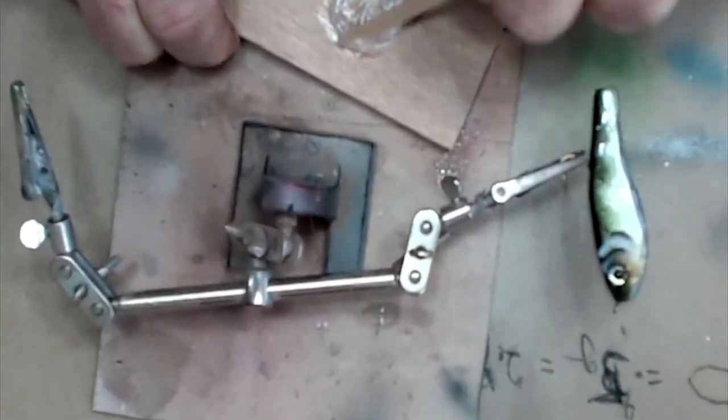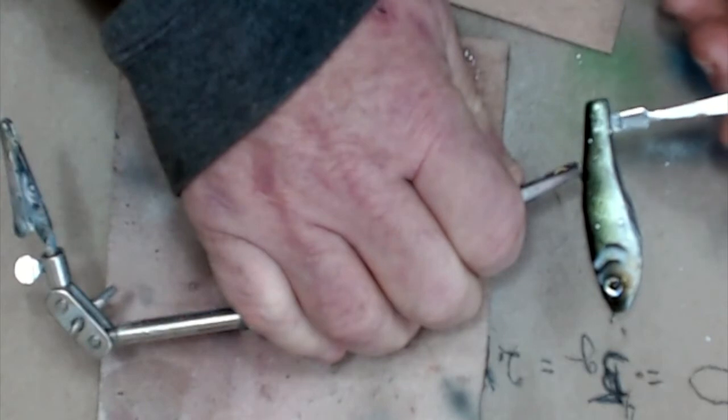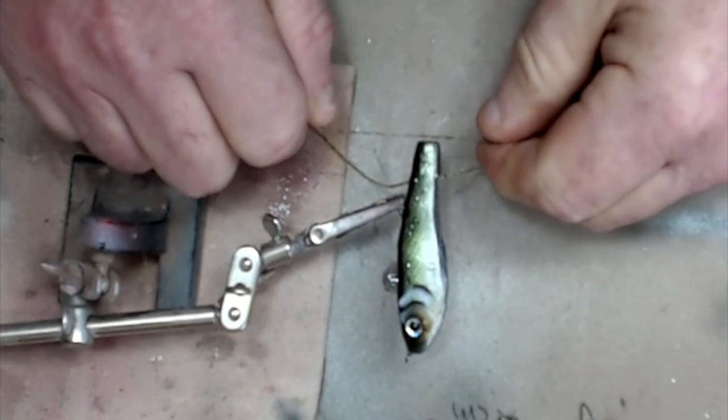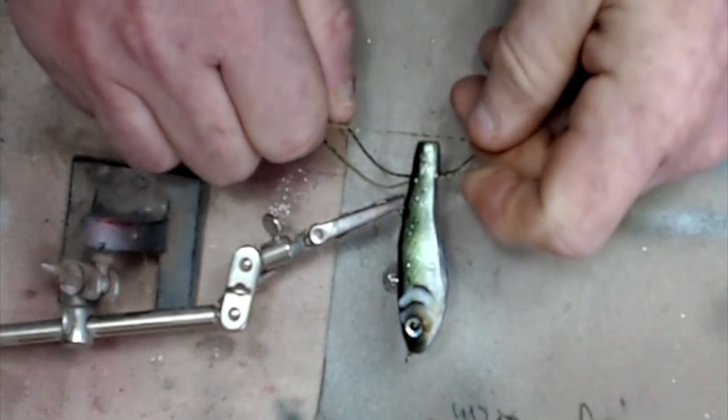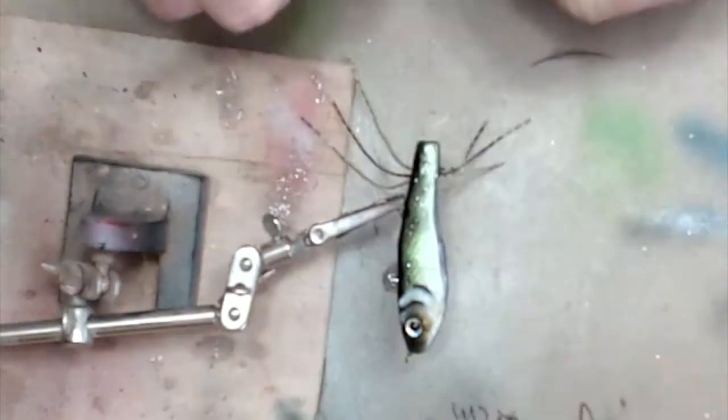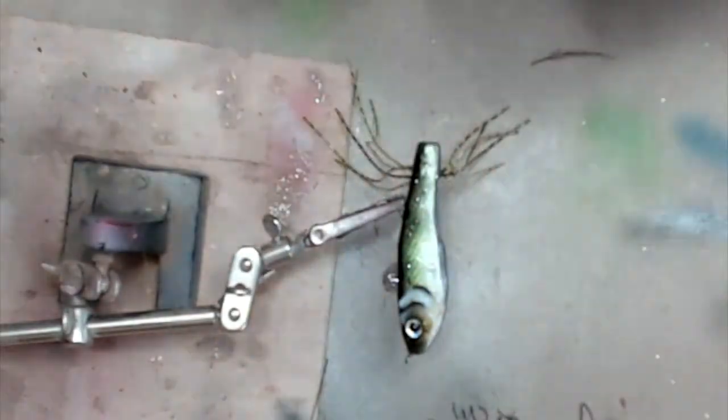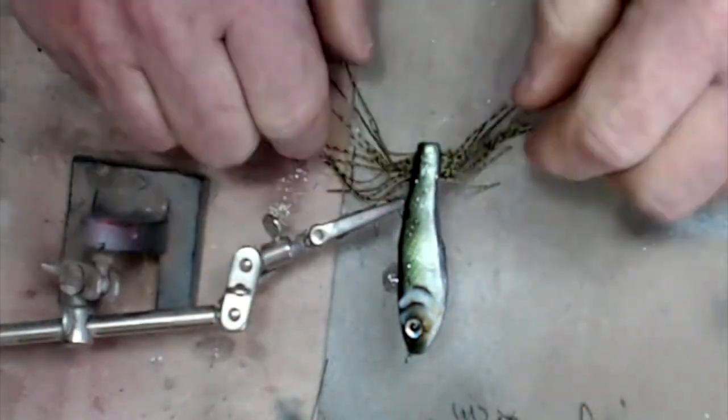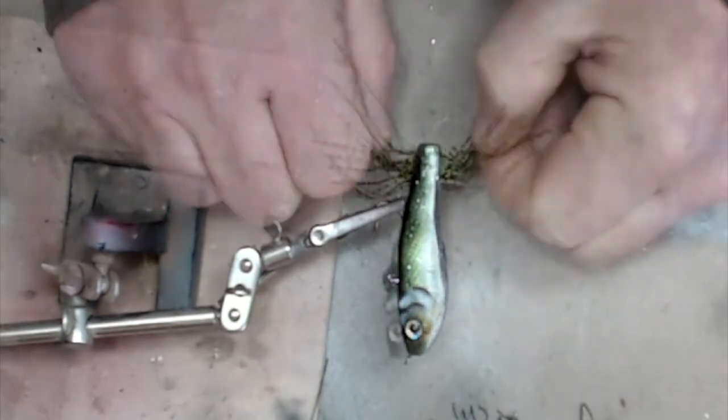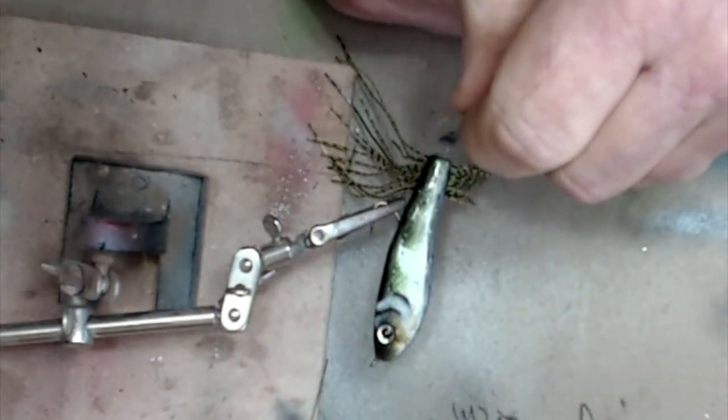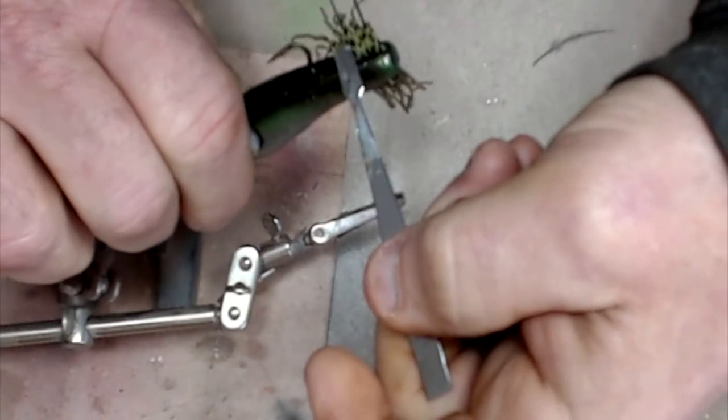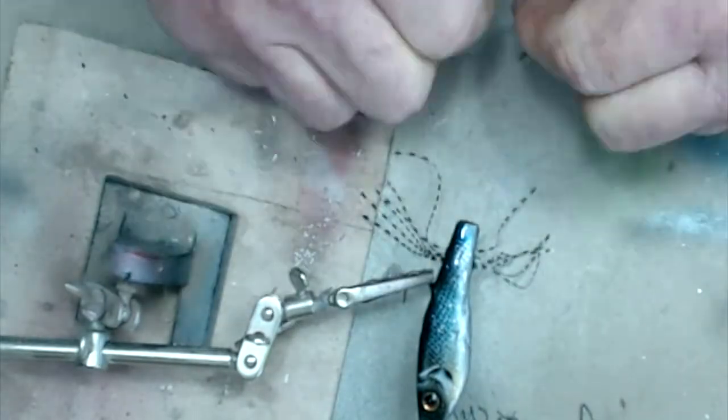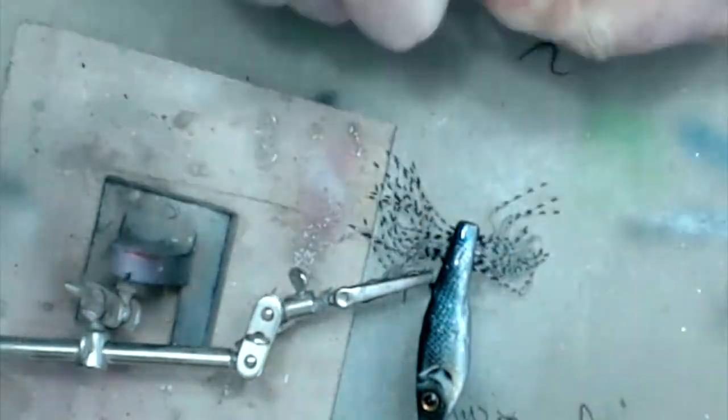And now for a little flashaboo. I'm just going to use some rubber skirt material, a little epoxy in the slot. And I'm going to put these strands in one at a time.